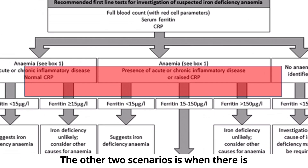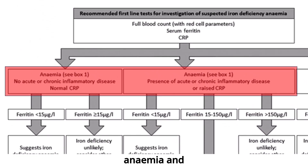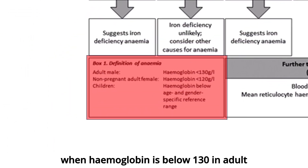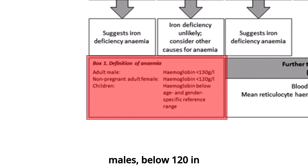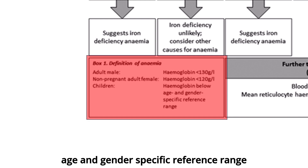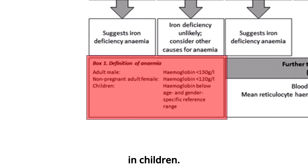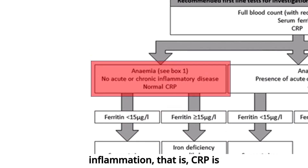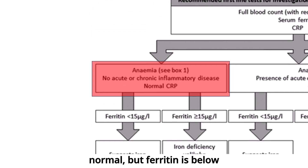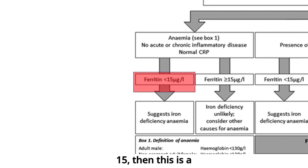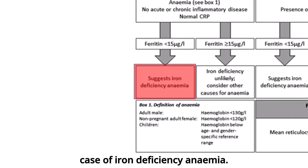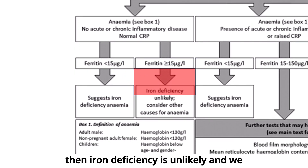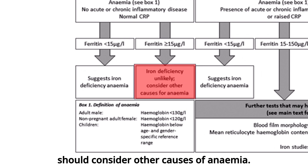The other two scenarios involve anaemia. According to WHO criteria, anaemia is when haemoglobin is below 130 g/L in adult males, below 120 in non-pregnant females, and below the age and gender specific reference range in children. If there is anaemia but no signs of inflammation — that is CRP is normal — and ferritin is below 15, then this is a case of iron deficiency anaemia. However, if ferritin is 15 or higher, iron deficiency is unlikely and we should consider other causes of anaemia.